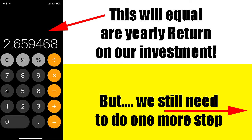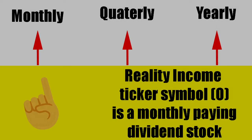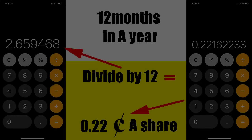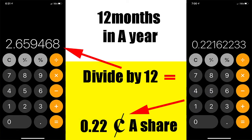Realty Income, ticker symbol O, is a monthly paying stock. So we're going to have to take that price we got — $49.99 times 0.0532 — and divide by twelve.